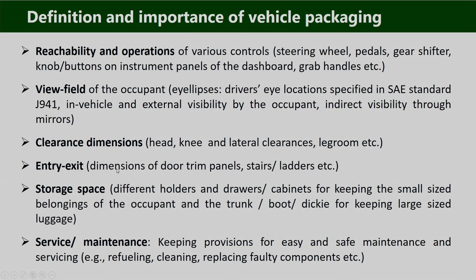Apart from driver positioning, we also discuss the reachability of operators for various controls like steering wheels, foot pedals, gear shifter, and knob buttons on the instrument panels. The view field of the occupant — the eye ellipse — and driver's eye location (SAE J941), as well as in-vehicle and external visibility (direct through windshield or indirect via mirrors), are studied. Clearance dimensions such as head clearance, knee clearance, thigh clearance, and lateral clearance are also evaluated so drivers and passengers can do their jobs comfortably.